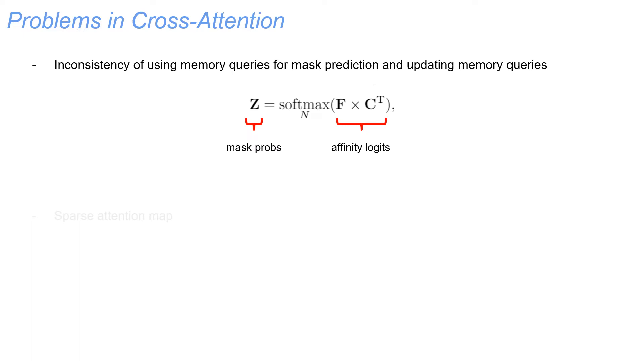Actually, we observe two problems. First, we note that the final segmentation prediction is generated in a similar way to cross-attention, where affinity logits is firstly computed and then converted to probability maps through a softmax on the memory query axis. However, even though similar to each other, the two formulations are different in the activation functions, which leads to an inconsistency between using and updating memory queries.